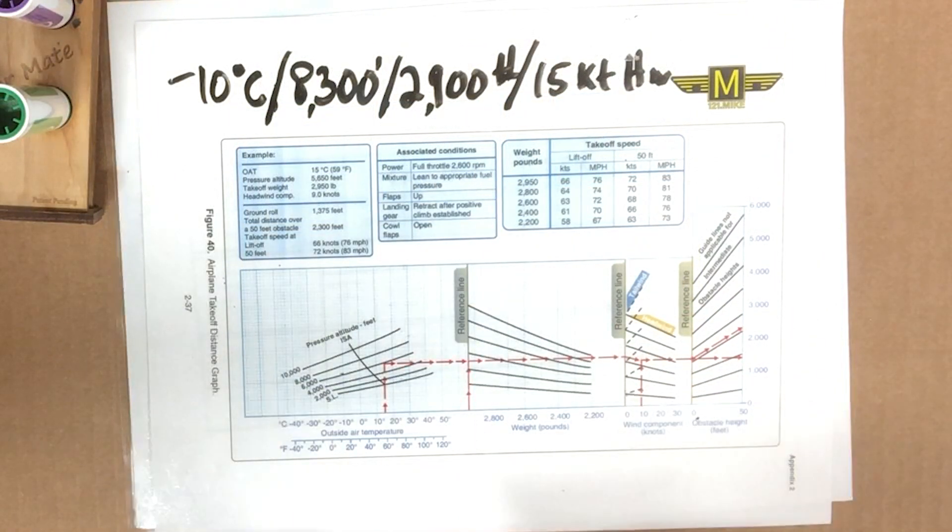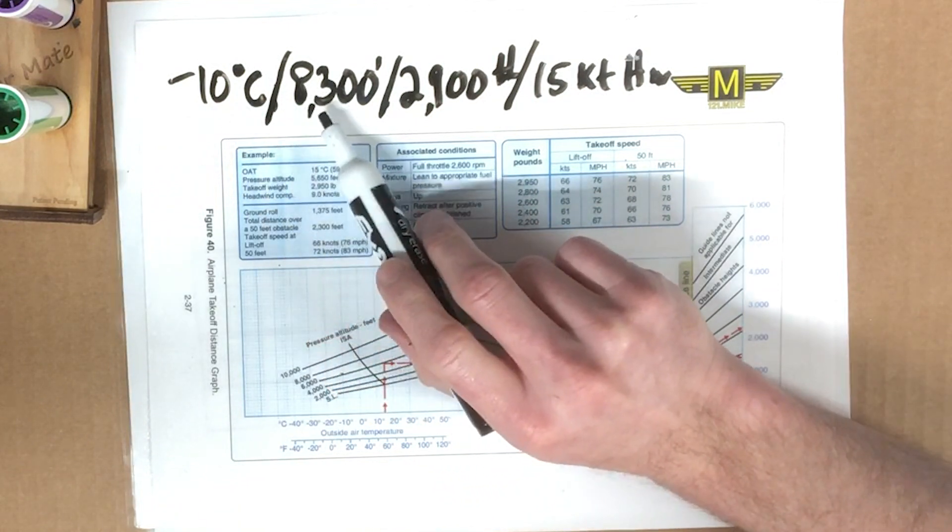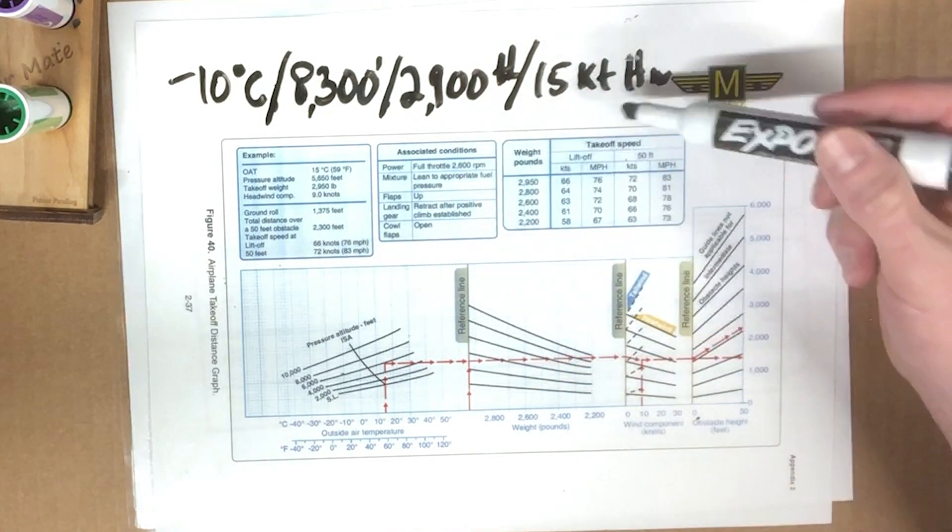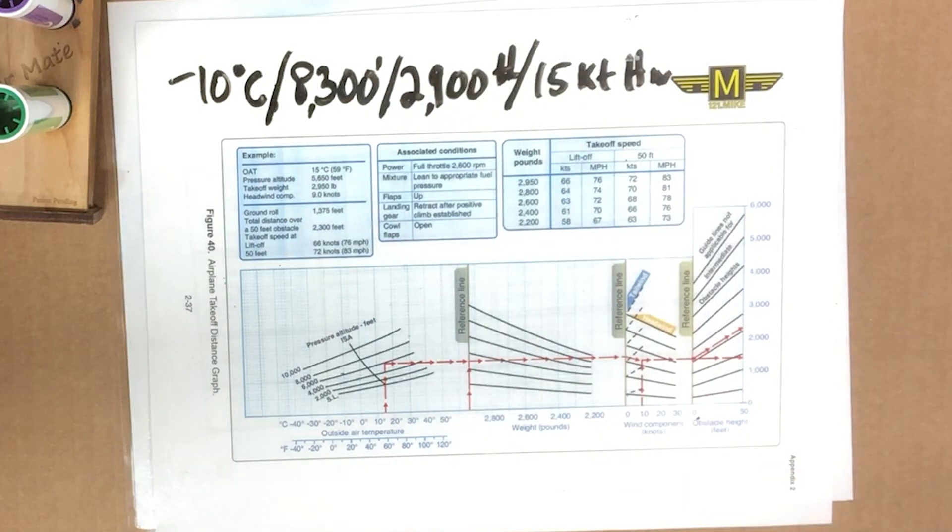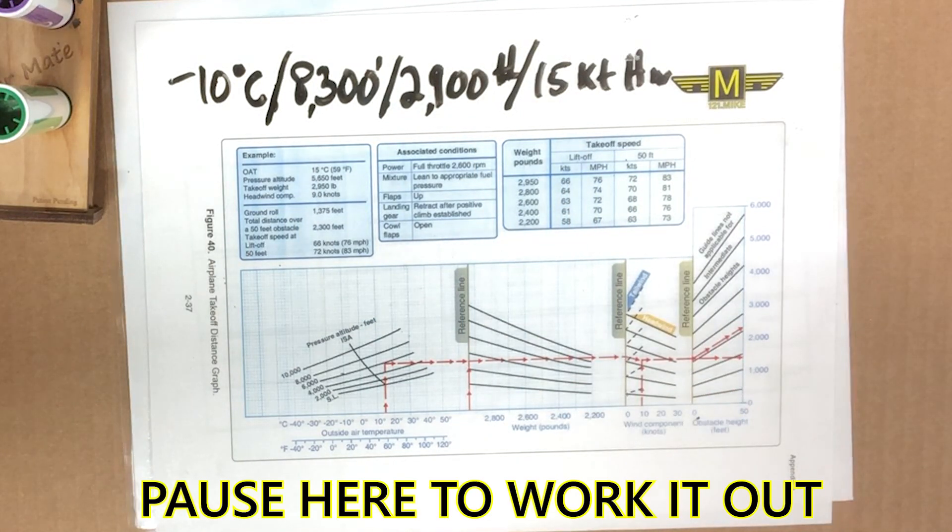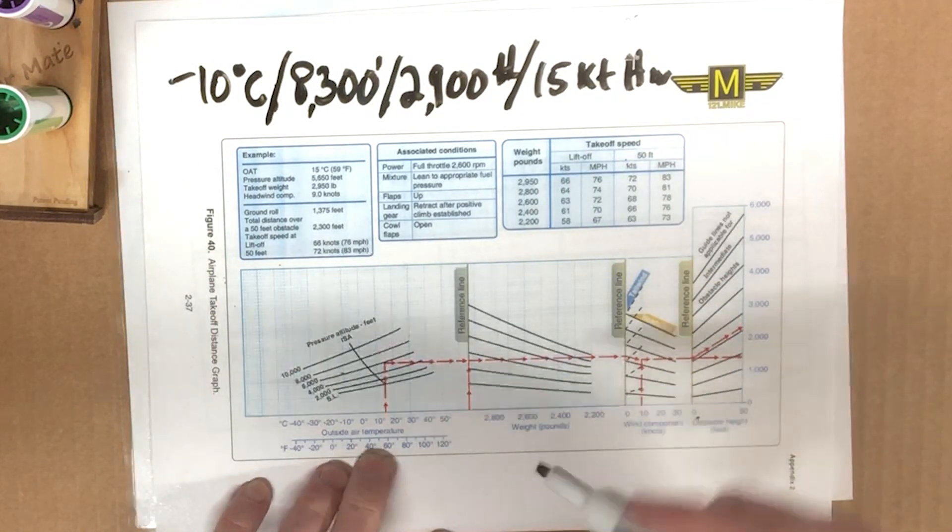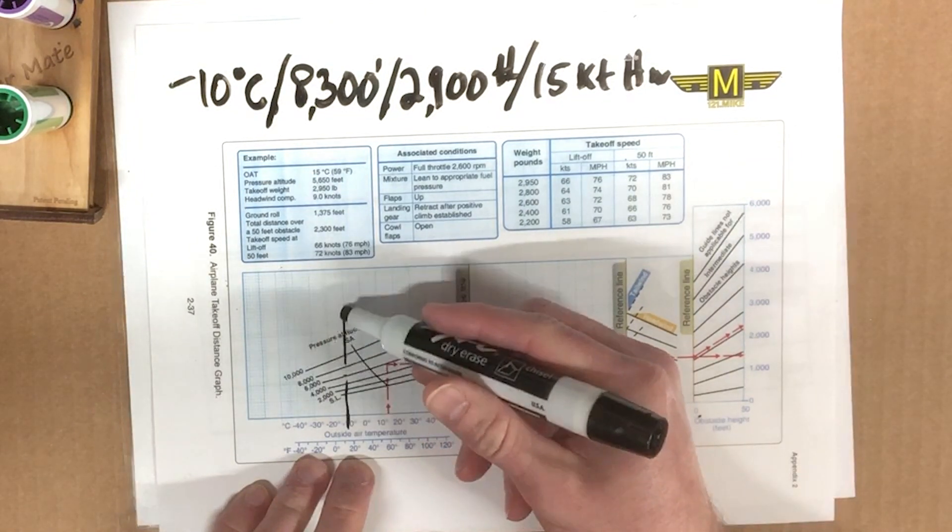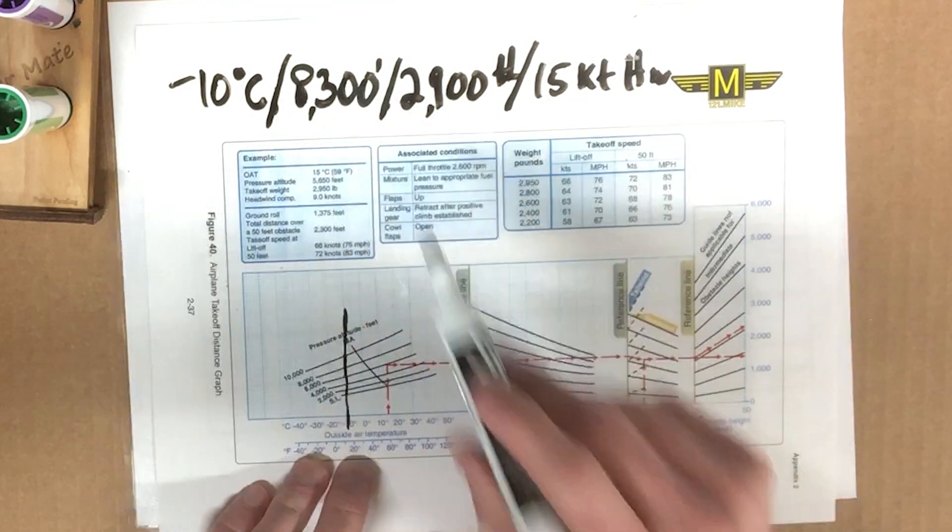So you're flying home after a ski trip. It's minus 10 degrees Celsius. You're at an 8,300-foot elevation, 2,900 pounds. So you're nearly full and you have a bitter 15-knot headwind. The question is, how much runway are you going to use and what speed are you going to lift off at? Well, let's enter our chart here at the left and work our way to the right. Outside air temperature is minus 10. So we're over here along this line, aren't we? Okay. Our pressure altitude was 8,300. So we're just a smidge above this 8,000 line, about right there.